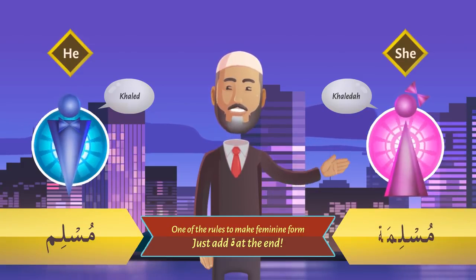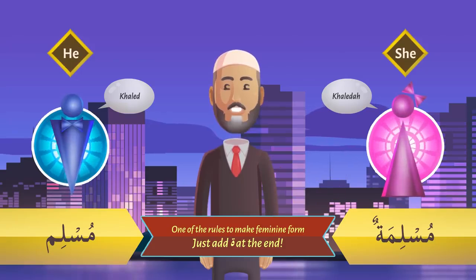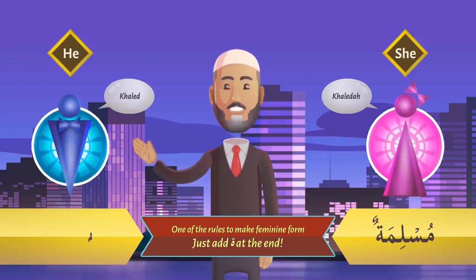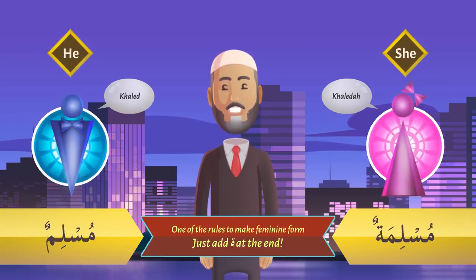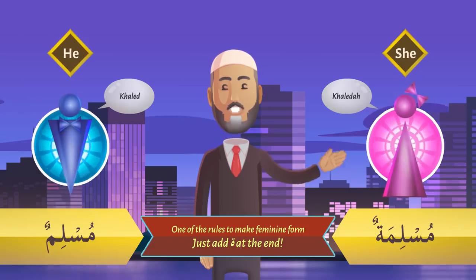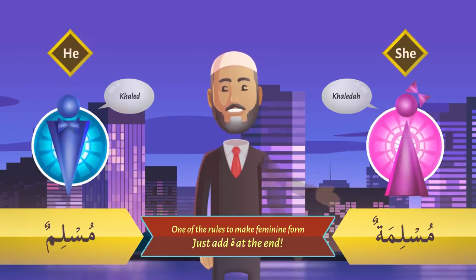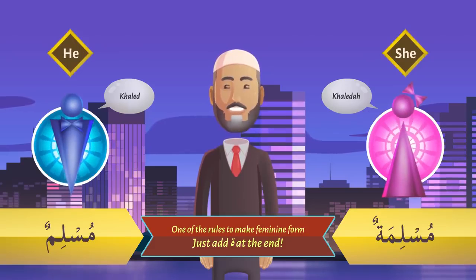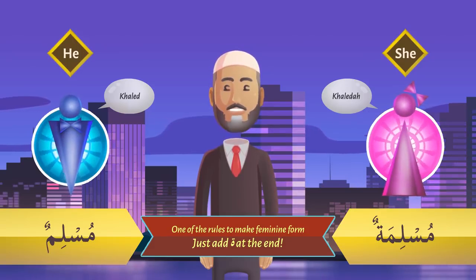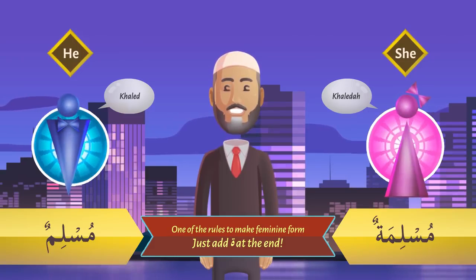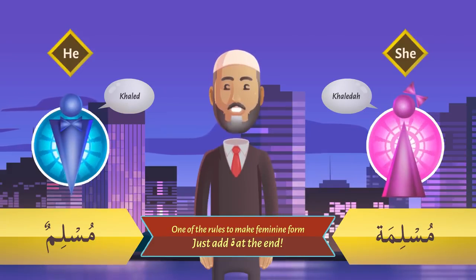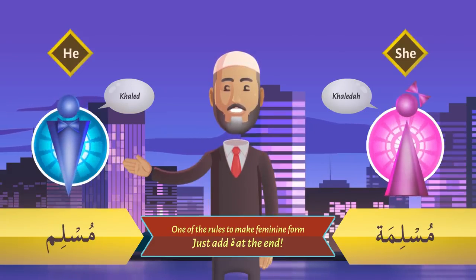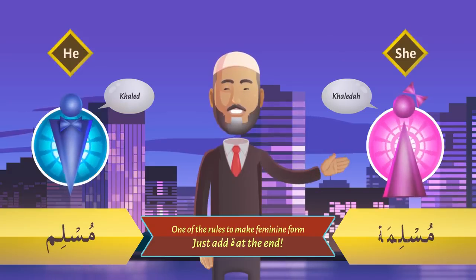So if you have مُسْلِمٌ, the feminine form will be مُسْلِمَةٌ. But if we stop, we don't say Muslimatun — we just say Muslimah. So for مُسْلِم it will be مُسْلِمَة.